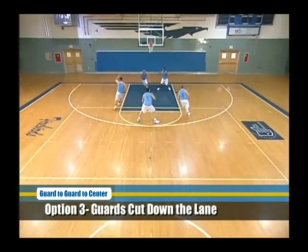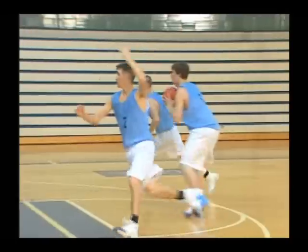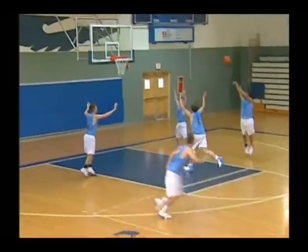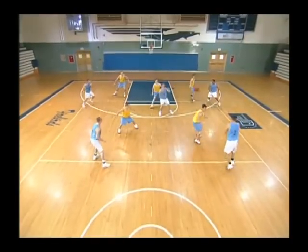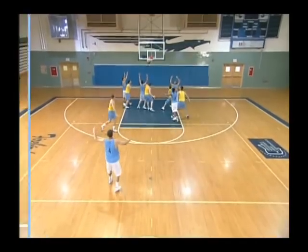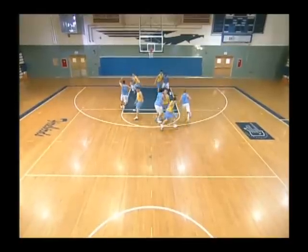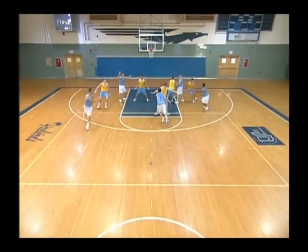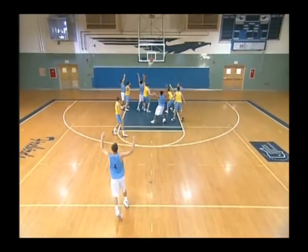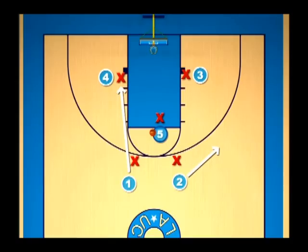On the guard-to-guard high post pass, the guards have several options. Here we're going to see them cross, then cut straight down the middle looking for the pass, and head for the block where they're going to set a screen for the forward. Both guards crossed and then went down to screen, and the center passed in to the forward coming off on the right. This can happen by the guards faking the cross and cutting down, or sometimes only one guard cuts down. They've got to learn to read which is best for them.